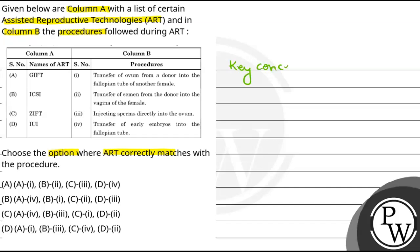If we talk about this question, that will be ART, i.e., Assisted Reproductive Technology. Now, if we define this process of ART, we can say that it is a set of medical techniques that help infertile couples to conceive.